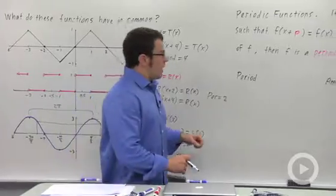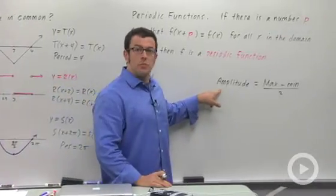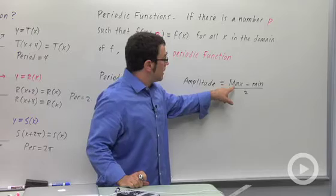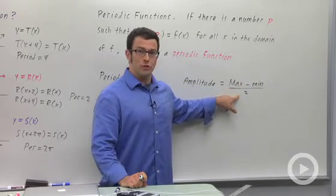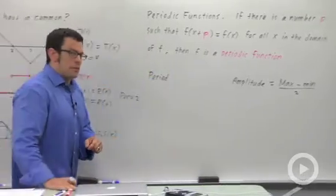Now there's one more thing I have to talk about with periodic functions, and that's amplitude. Amplitude is defined as the maximum value minus the minimum value over 2. Let me show you what that means.